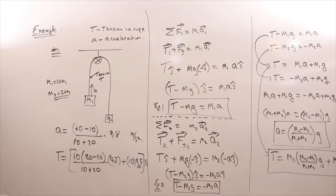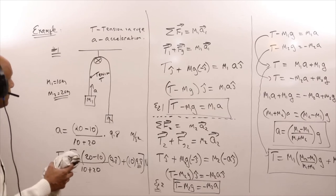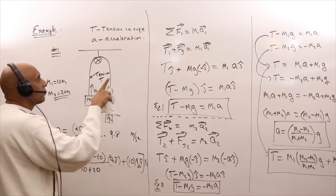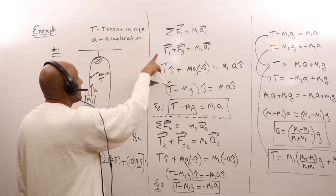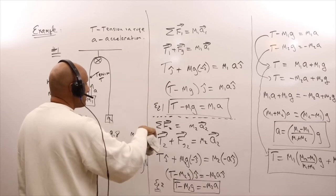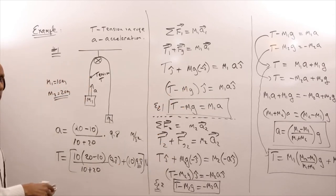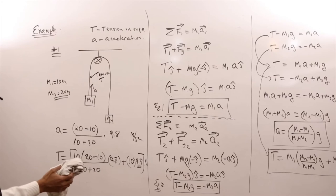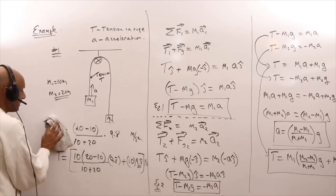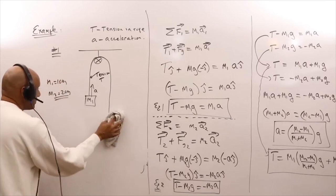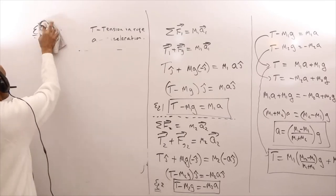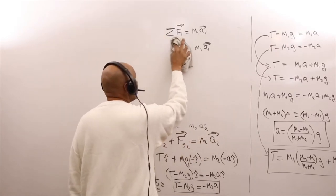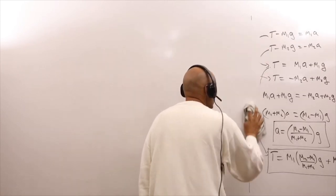The basic procedure is always the same: draw a diagram, do a free body diagram, write your sigma F's, convert those into equations, then solve. Repeat this over and over again for all Newton's law calculations.